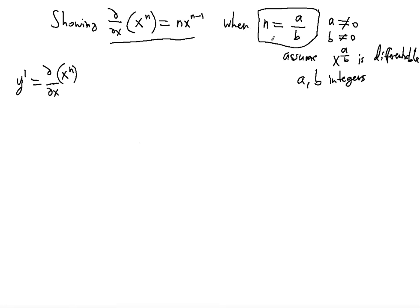Now, the conditions hold that n — we're going to assume that n is equal to a over b, with a and b non-zero integers. They must be integers because we're going to use the power rule while we use implicit differentiation. We're also going to assume that x to the power of a over b is differentiable. Since y prime is equal to the derivative of x to the nth power, then y itself must be x raised to the nth power.